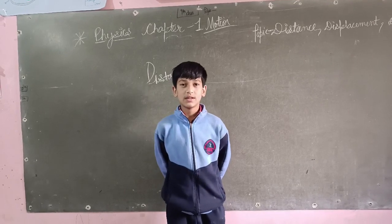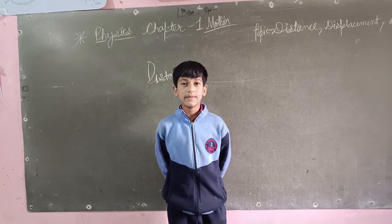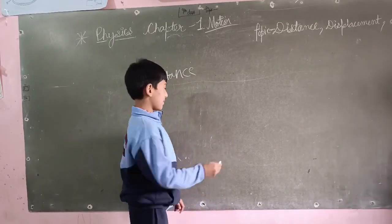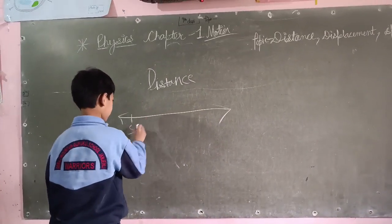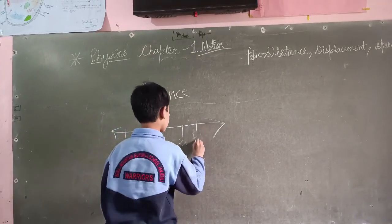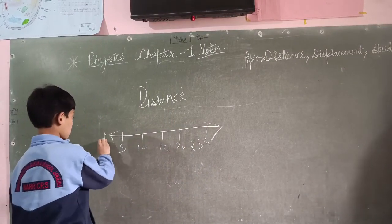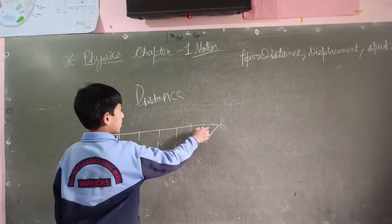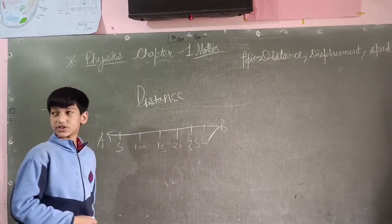The action path traveled by an object will produce the distance. Now if you take an example — this is A-5, this is D-5 — as we go here and come back again here, so our distance is 60.